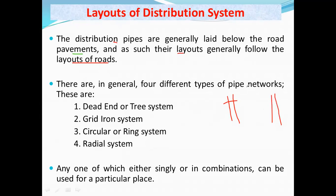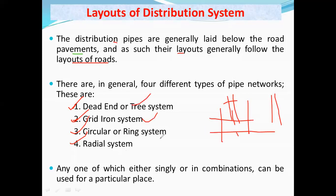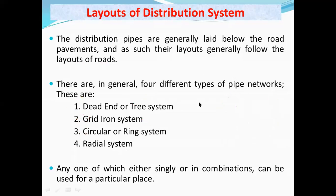The distribution system network can be classified into four categories: one is the dead-end system, the second is the grid iron system, the third is the circular or ring system, and the last one is the radial system. These systems can be designed or laid in one particular kind of layout or in a combination of these. We will now see each type of layout in detail.